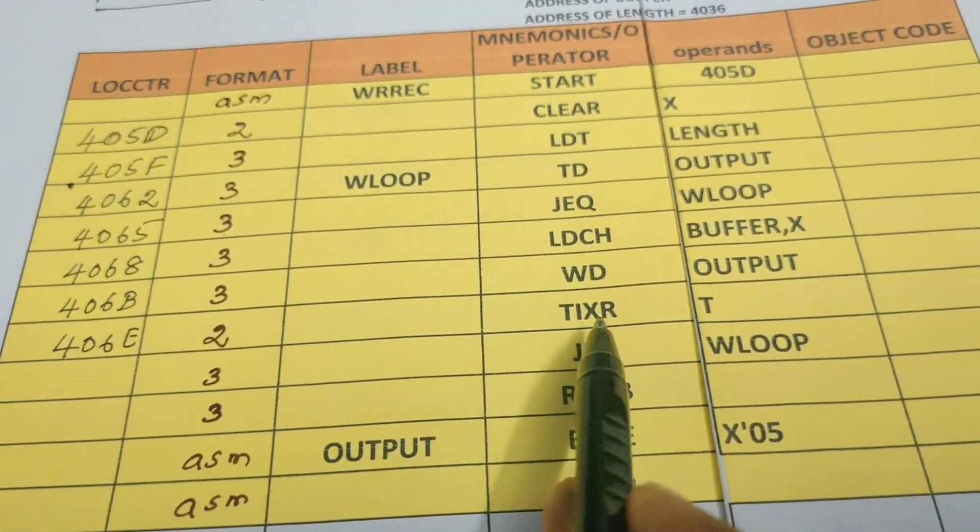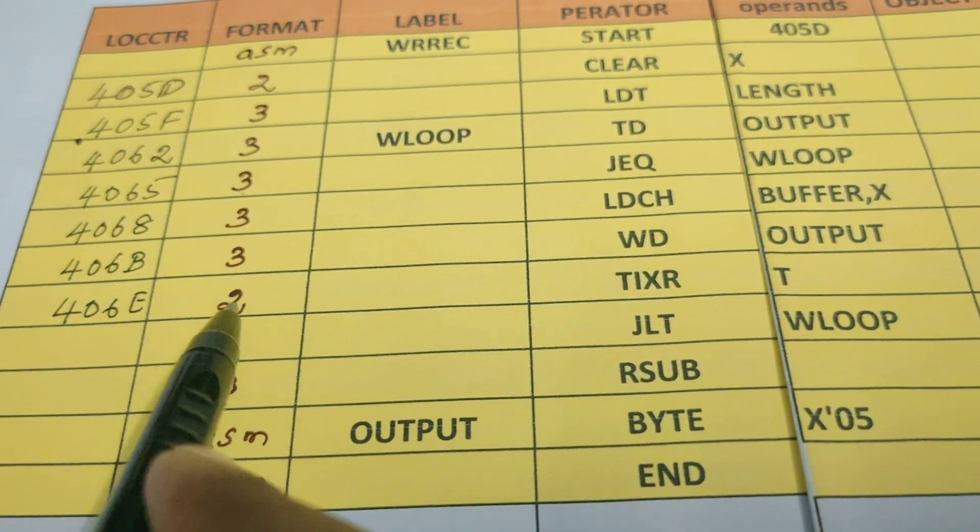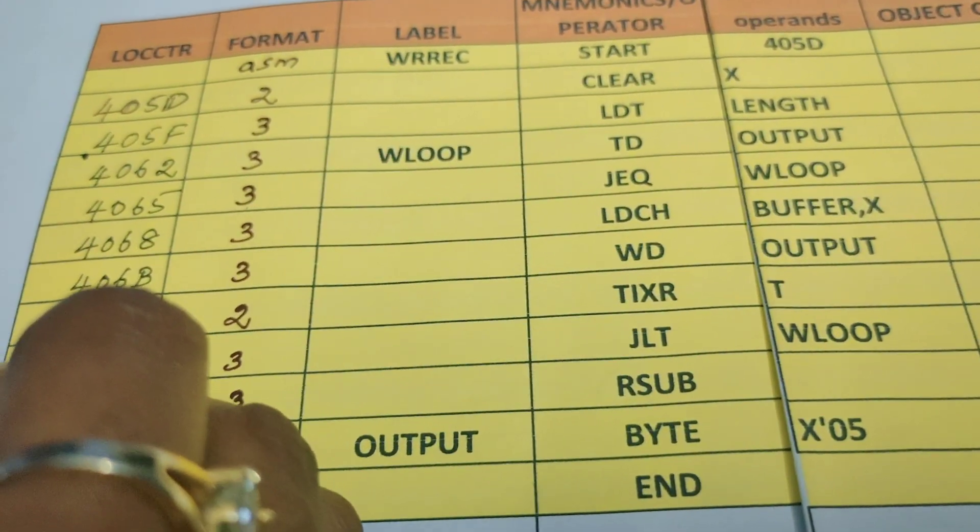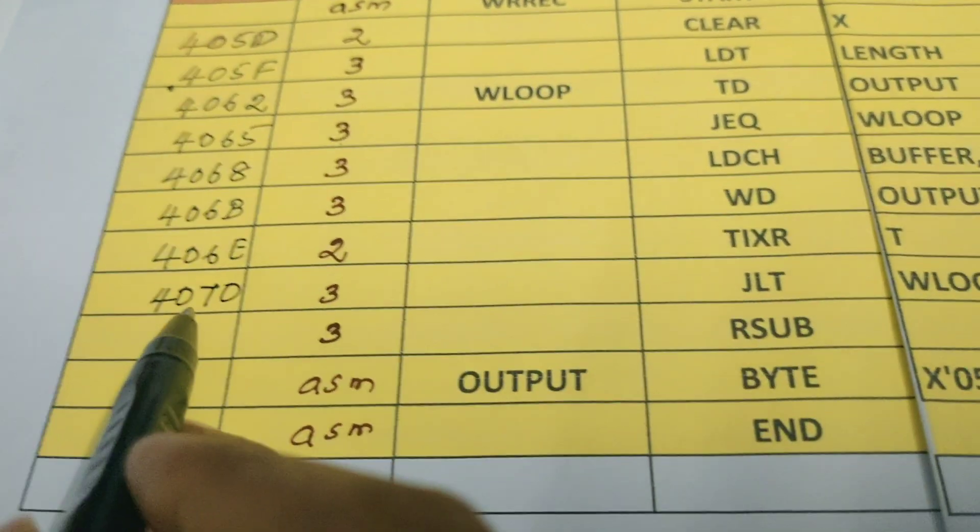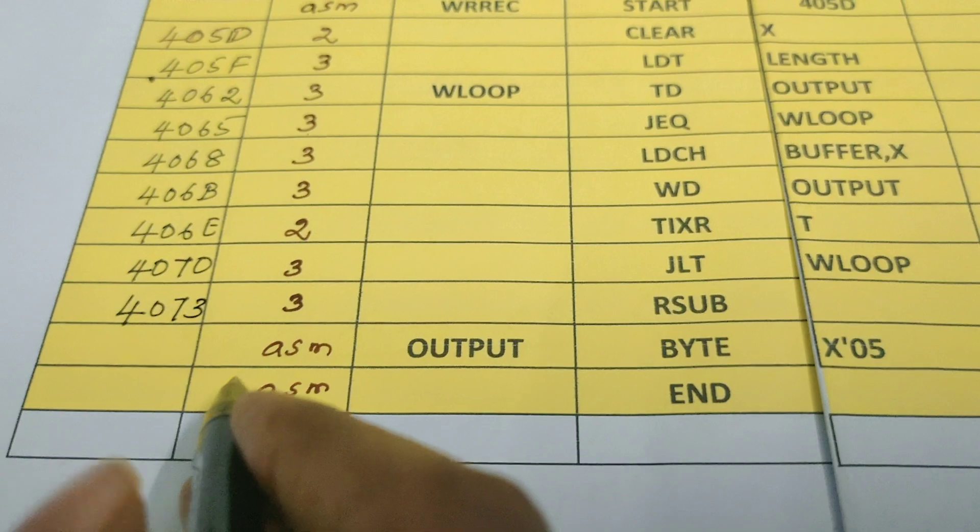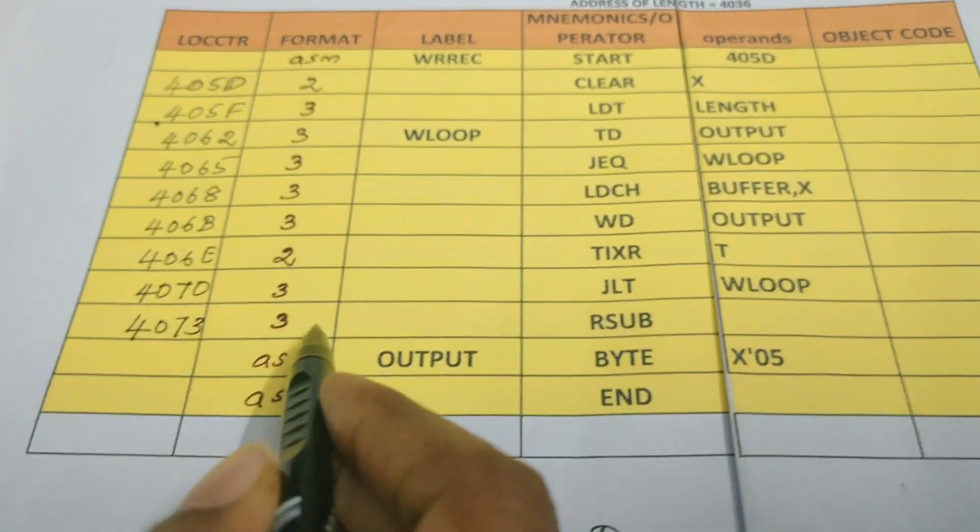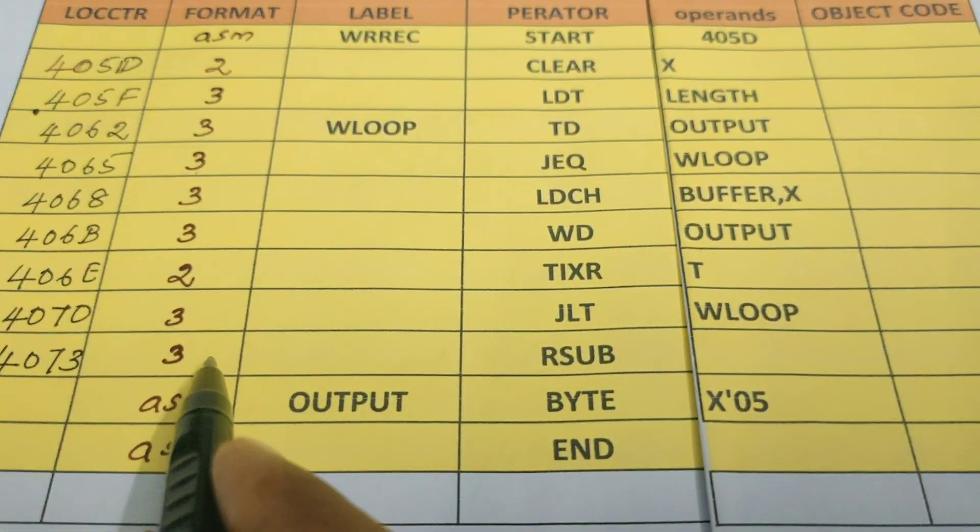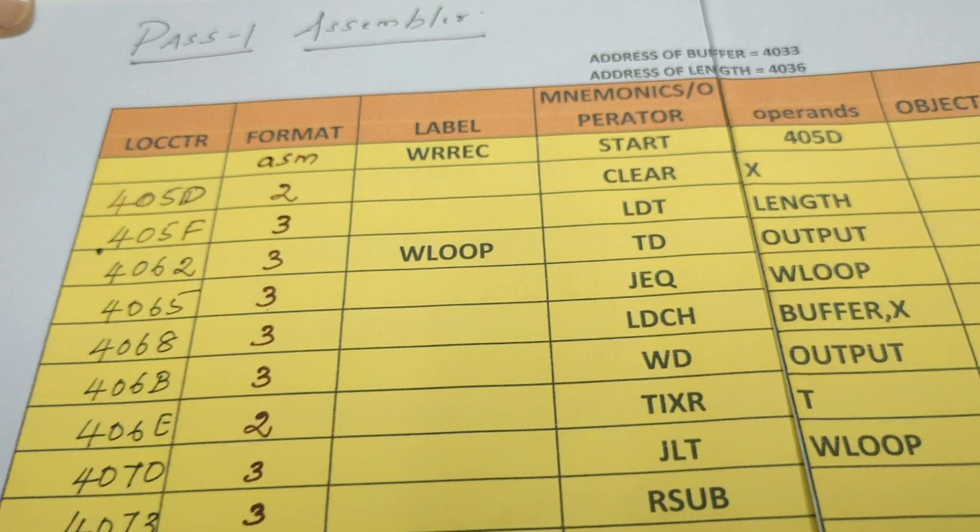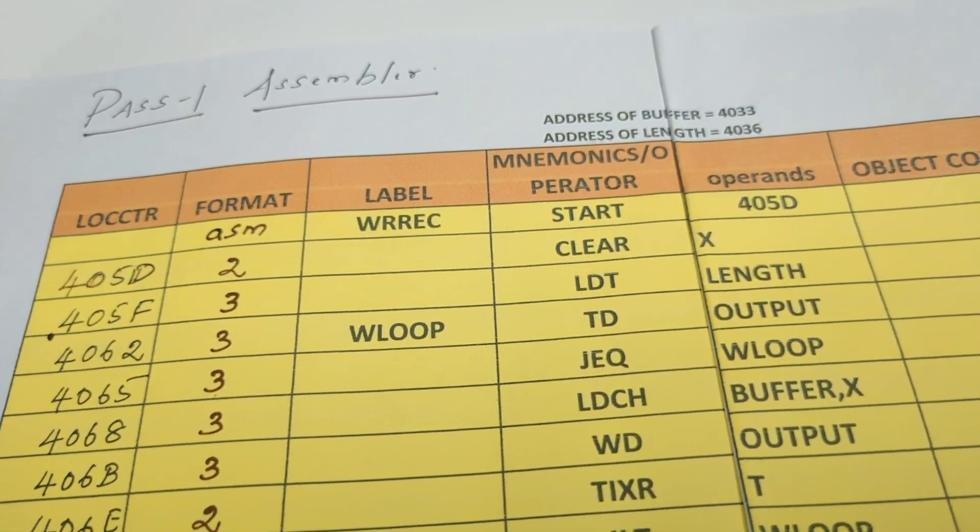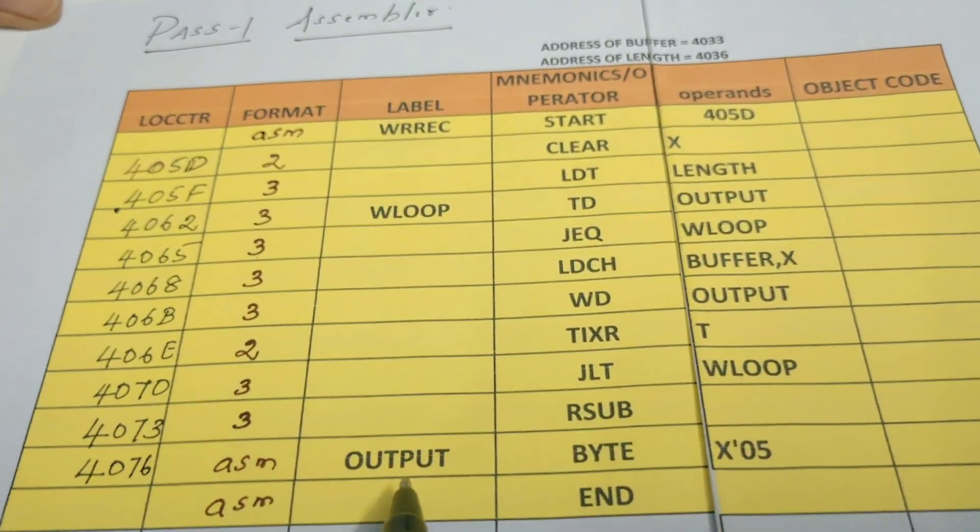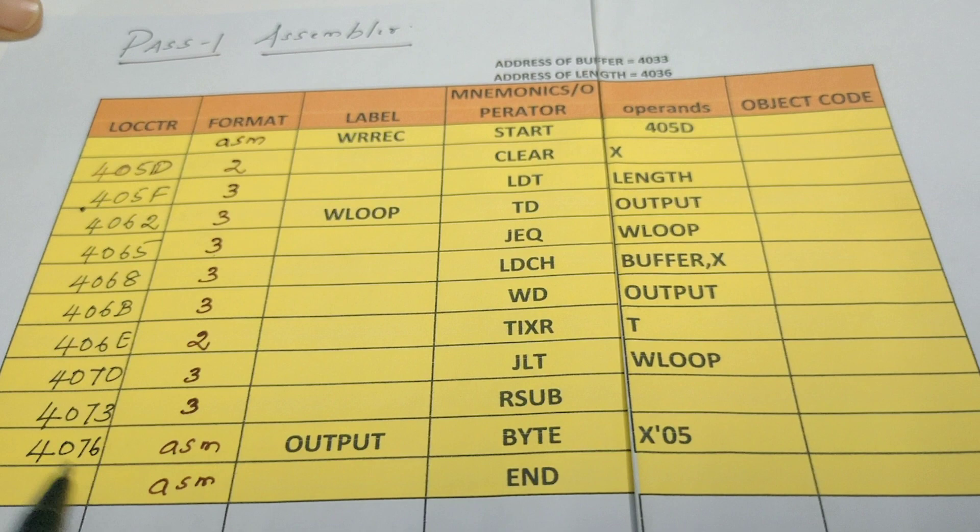The starting address is 406E. What is the address of the next instruction? 406E plus 2 means 4070. Then 4070 plus 3 will give you the address of the next instruction which is 4073. 4073 plus 3 is the total length of the memory occupied by this subroutine starting from 405D. Now we will give the address for this label also, 4073 plus 3 is 4076. Now we identified addresses for all the instructions.